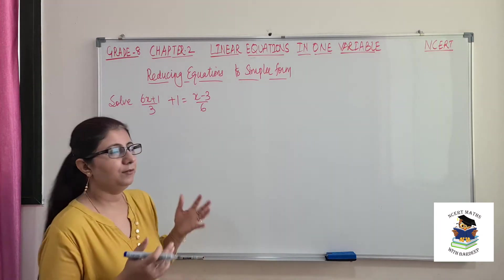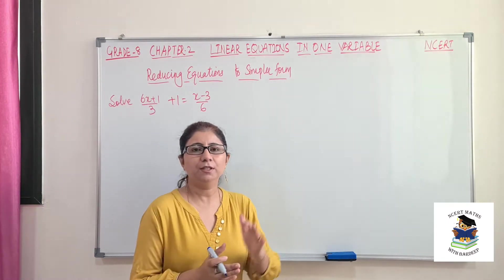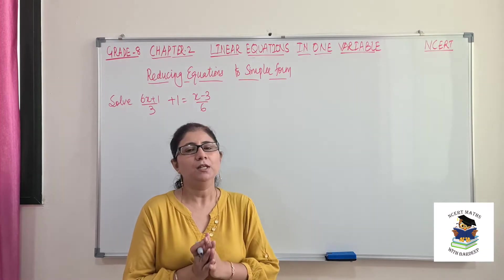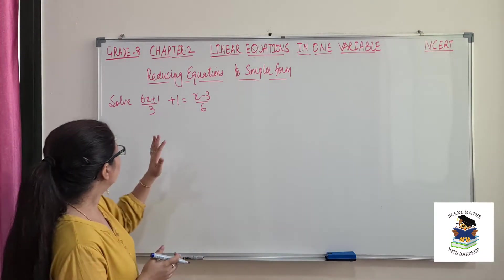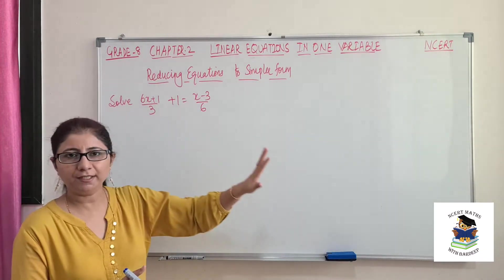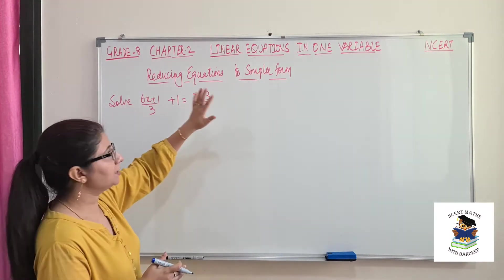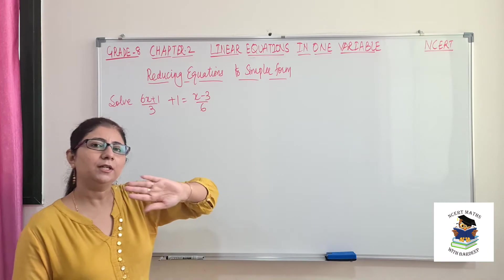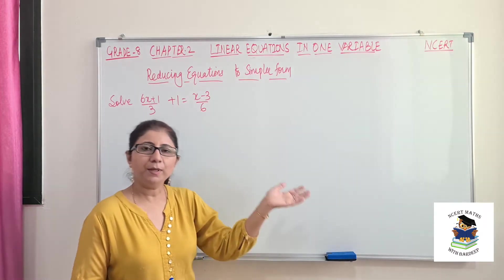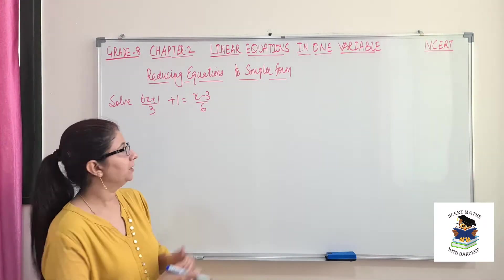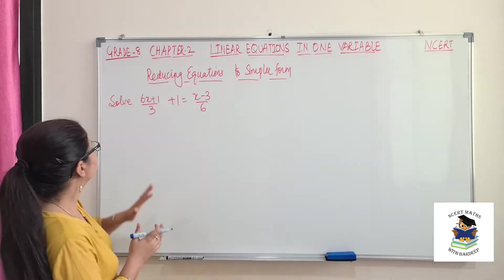So till now we have done equations already given in directly linear form. But here in our case, it will be like it's not directly a linear equation. We will have fractions somewhere or some other forms. First we will convert them into linear form and then we will solve it. So let's see how to solve this type of question.